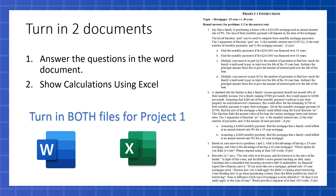This assignment will be turned in through Canvas. You'll turn in two documents. The first is a Word document where you answer the questions that are asked. You can download the instructions and type your answers directly into that document, then upload it. You'll also need to upload an Excel file.